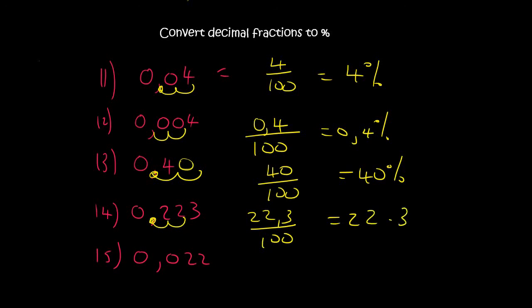And then you move two decimals, 1, 2, so that's in between this, that's 2.2 over 100, and that's 2.2%. There we go guys. So we have now learned how to convert from decimal fractions to percentages.